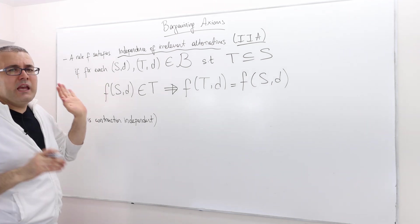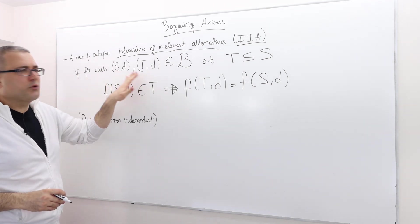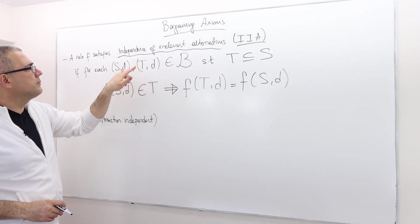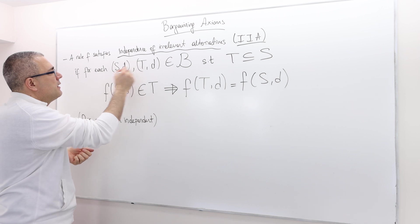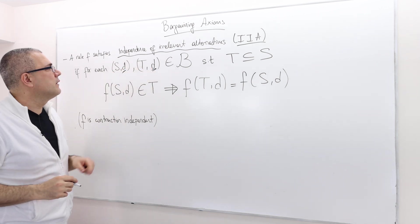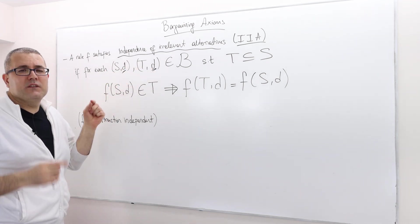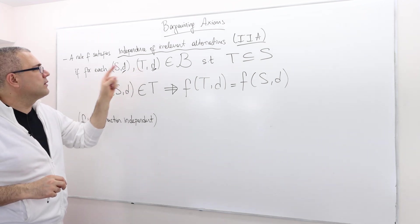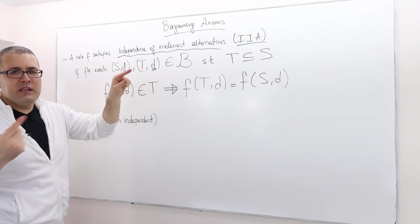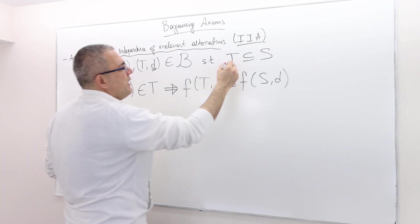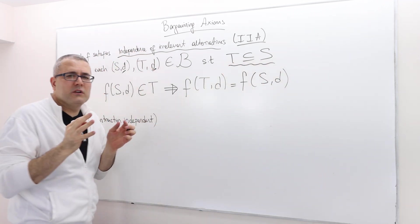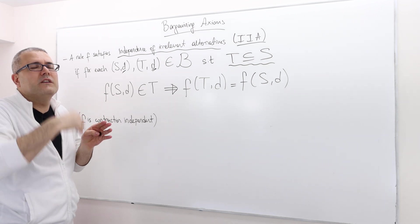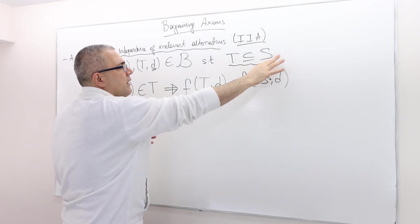If for any two bargaining problems, the important thing is these two bargaining problems have exactly the same disagreement point. The only difference is the set of feasible payoffs. One has S, the other one has T. And the other important thing is that T is a set smaller than S. So whatever alternative is included in T is also included in S.